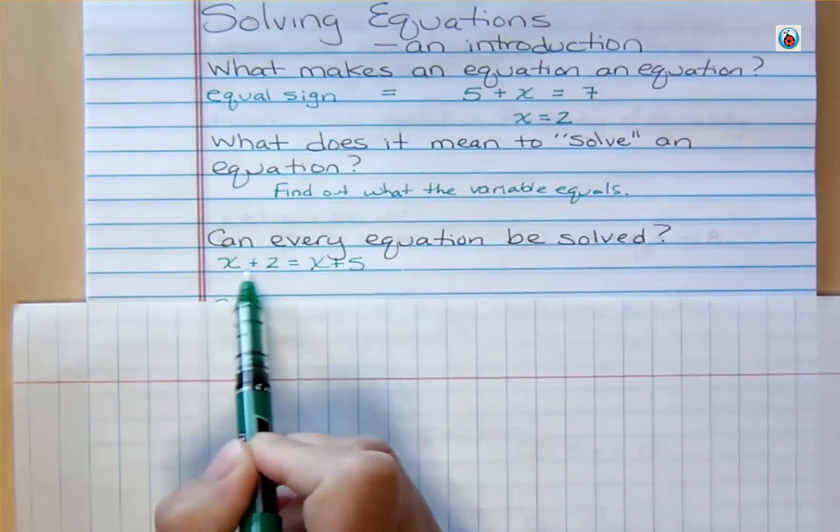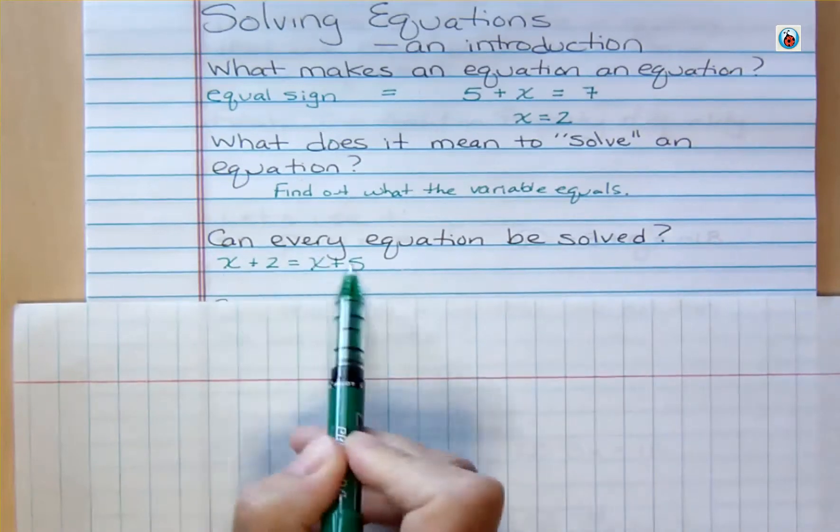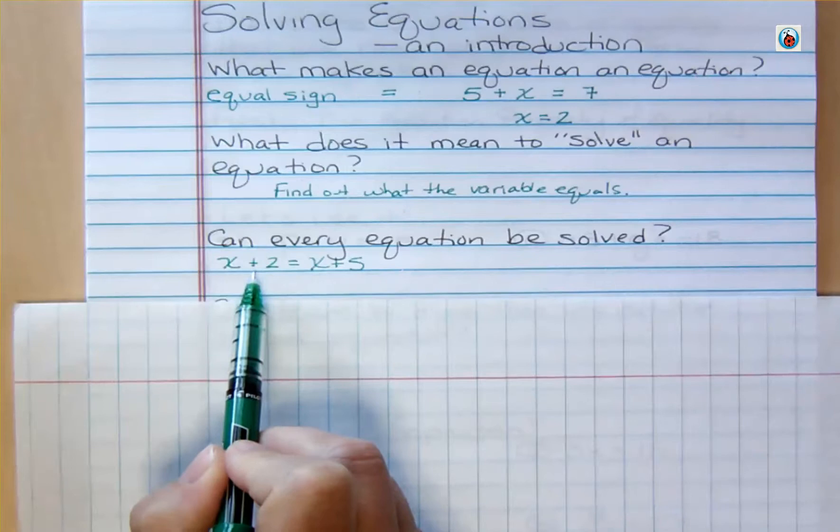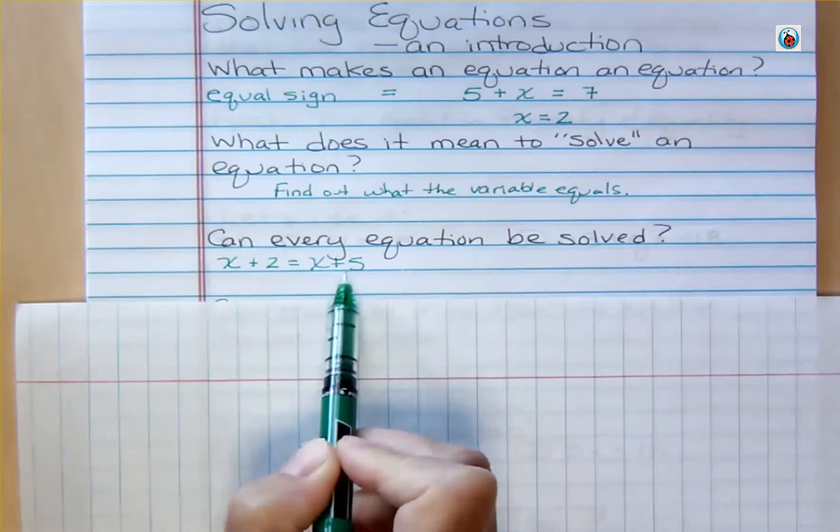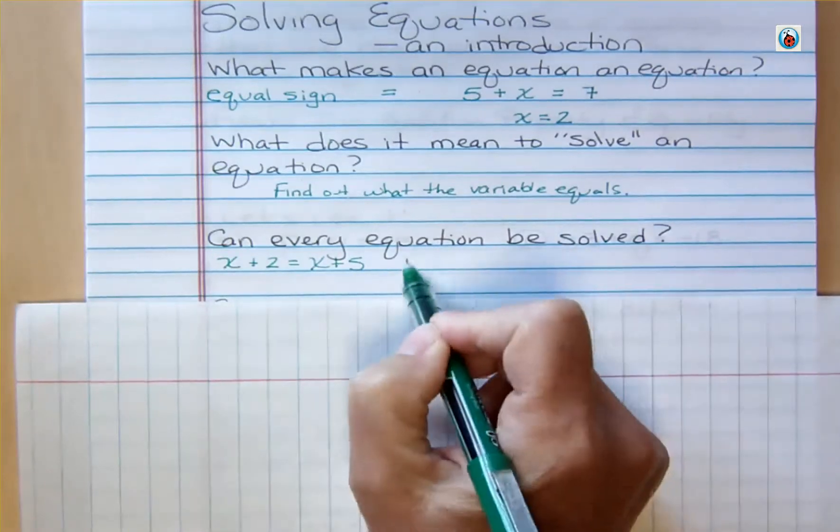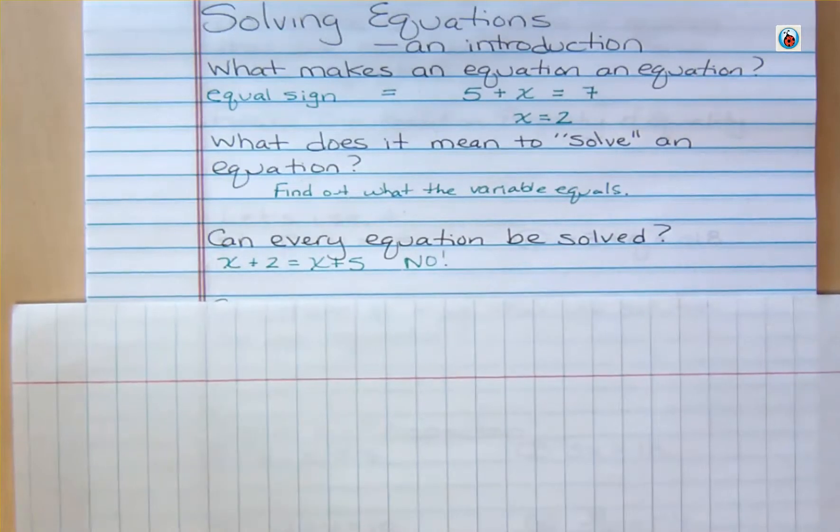If you had 1, 1 plus 2 is 3, 1 plus 5 is 6. Well, that wouldn't work. In fact, there's no variable in the world that you can add 2 to it and add 5 to it and have them be equal. So the answer is no. But most of the equations that you're going to start off with are solvable. But it's true, you can find some that aren't.